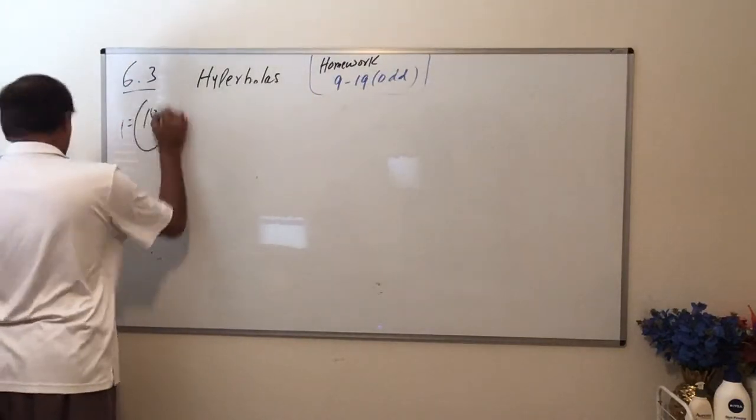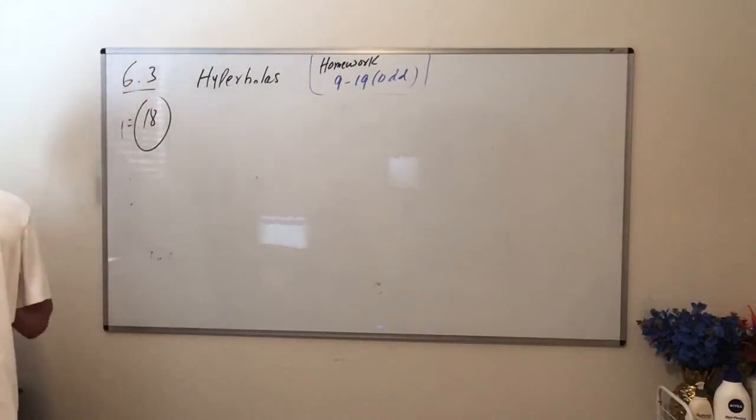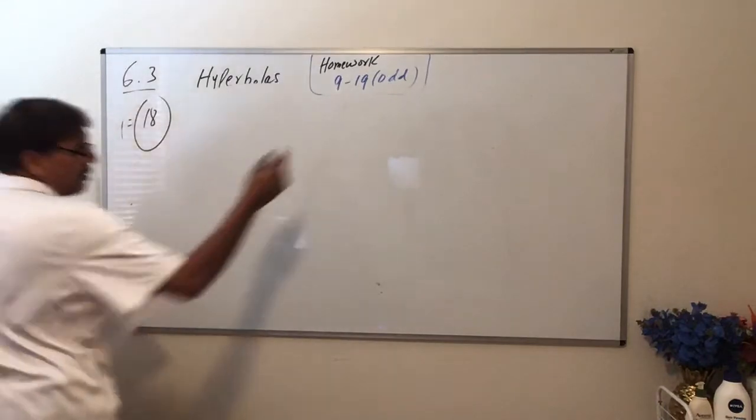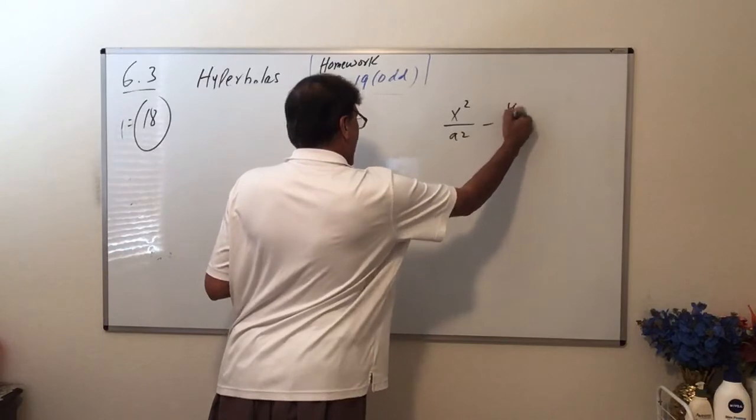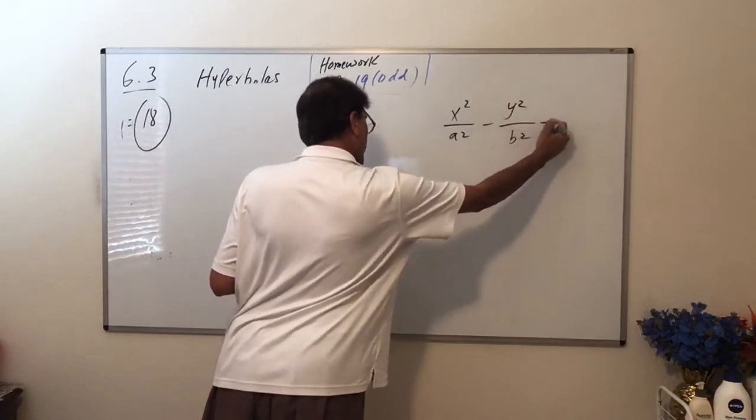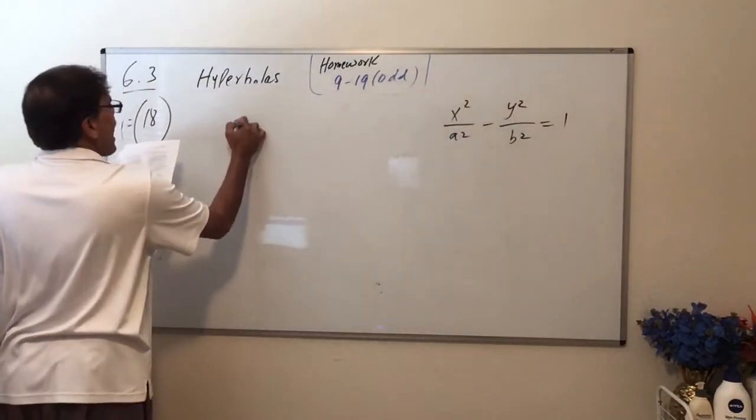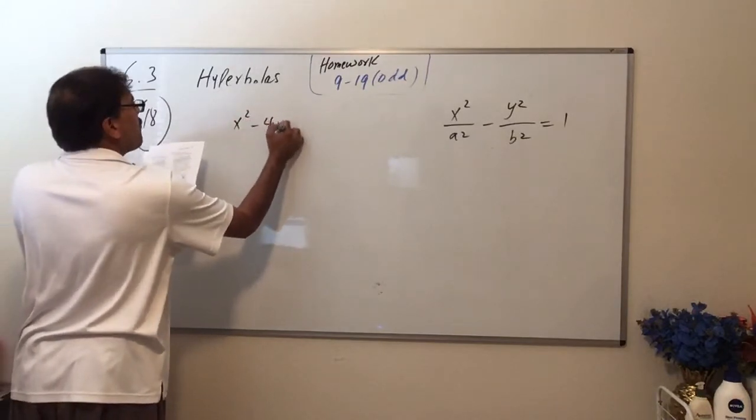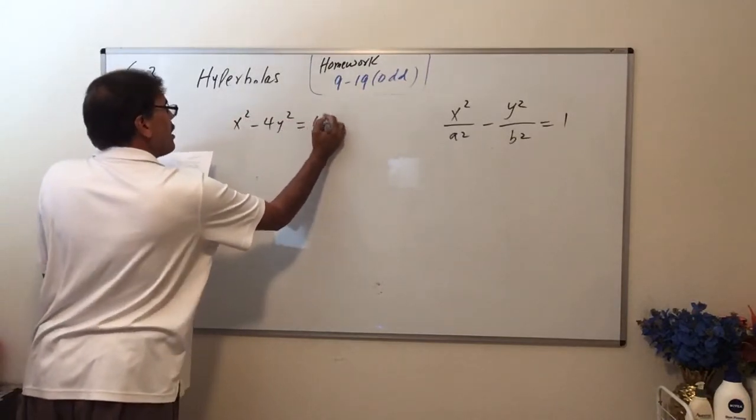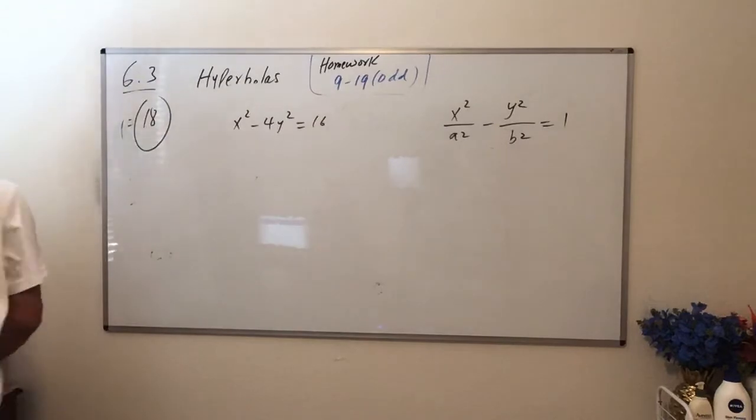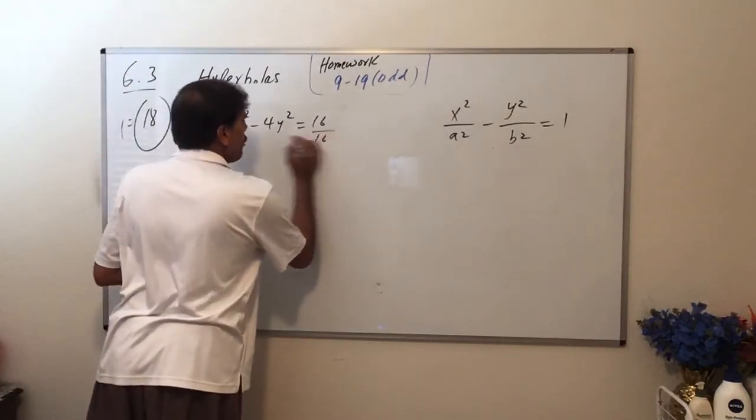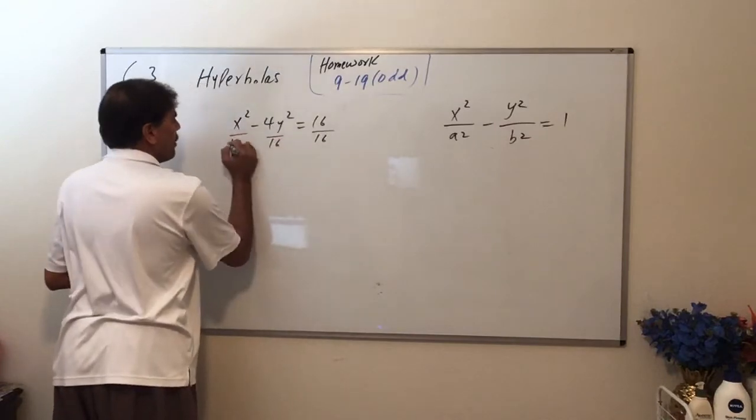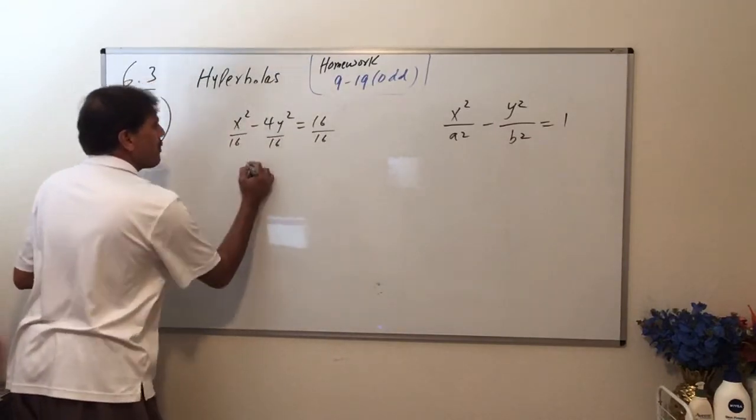So number 18 is not in standard format. Remember, the standard format is x² over a² minus y² over b² equals 1. So here's number 18: x² minus 4y² equals 16. To make this equal 1, you must divide everything by 16. So this is x² over 16.